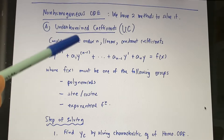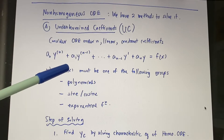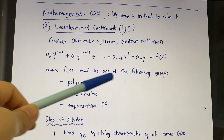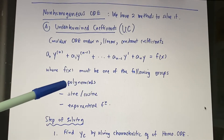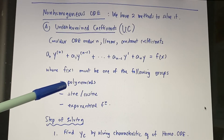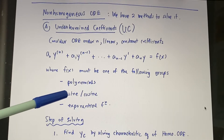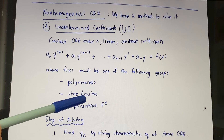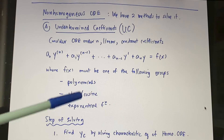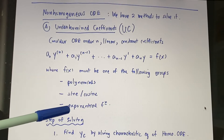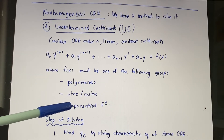We can use the undetermined coefficients technique if f(x) belongs to one of the following groups: f(x) can be a polynomial function, f(x) can be a sine or cosine function, or f(x) can be an exponential function.